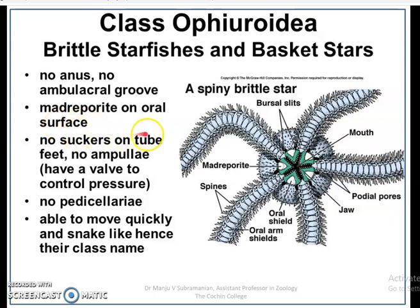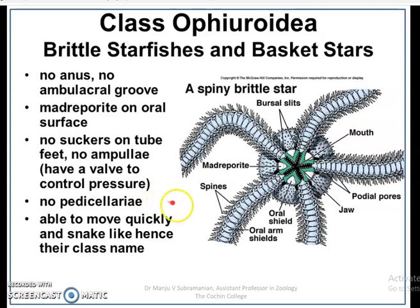Structures like suckers are absent in the tube feet of Ophiuroids, and ampullae are also absent. Pedicellariae are absent as well. An important feature of Ophiuroidia is that they can move quickly like a snake, and hence the class is named Ophiuroid.